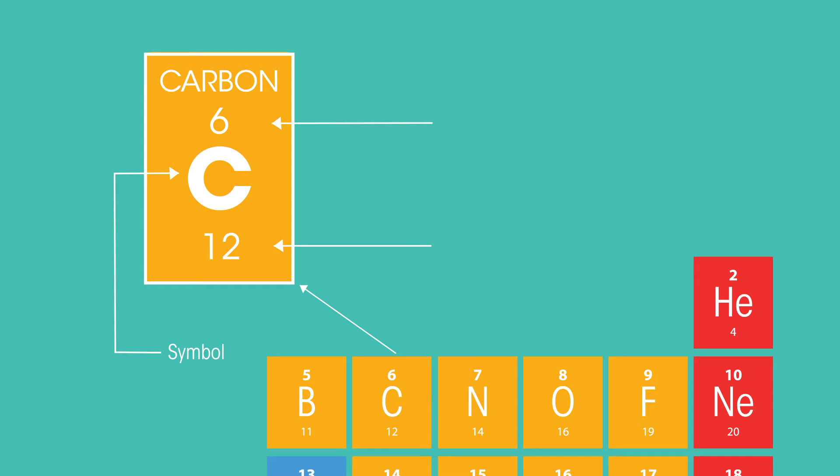By this symbol are two numbers. The smallest number is the atomic number, and it tells us the number of protons. The number of protons is equal to the number of electrons, unless the atom has become an ion. More on that in a bit.